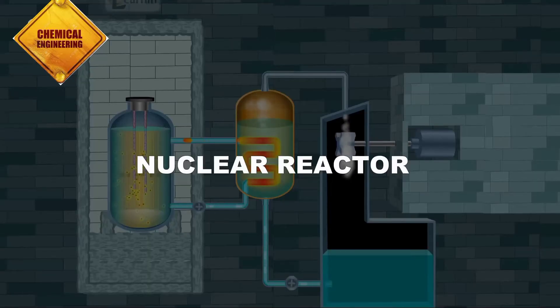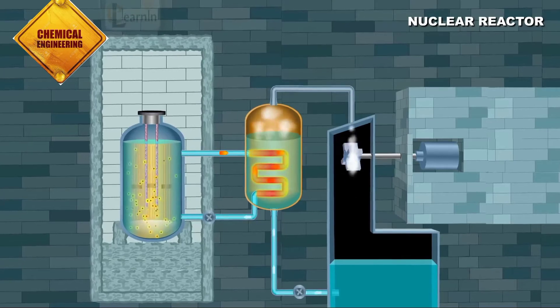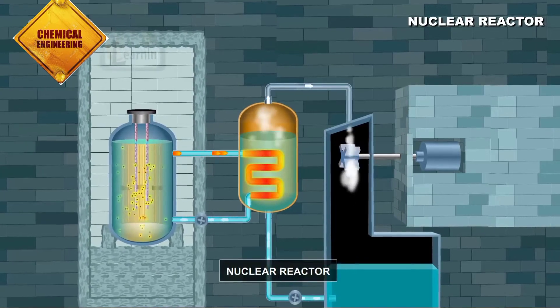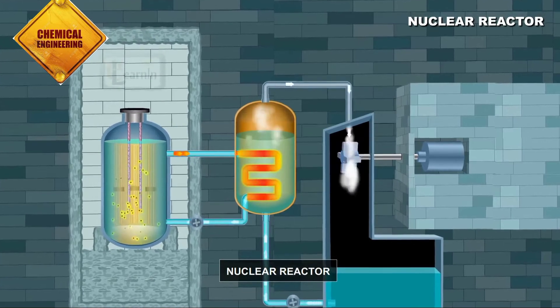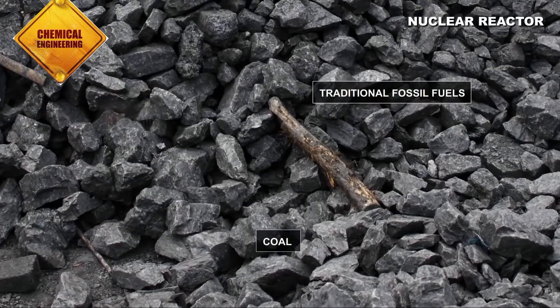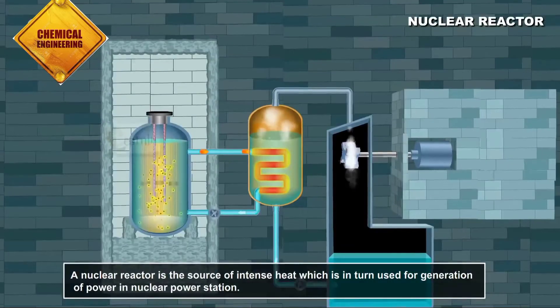Nuclear reactor. In this video we're going to learn about the nuclear reactor. Nuclear reactors are the modern-day devices extensively used for power generation as the traditional fossil fuels like coal are at the breach of extinction. A nuclear reactor is the source of intense heat which is in turn used for generation of power in nuclear power stations.